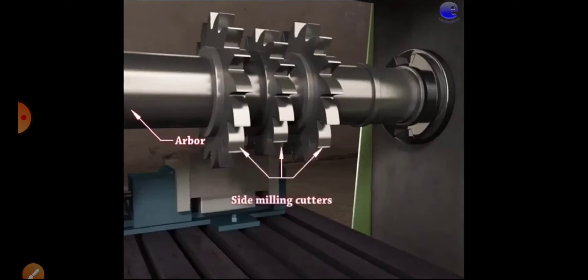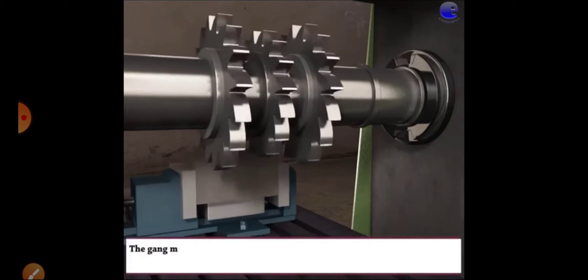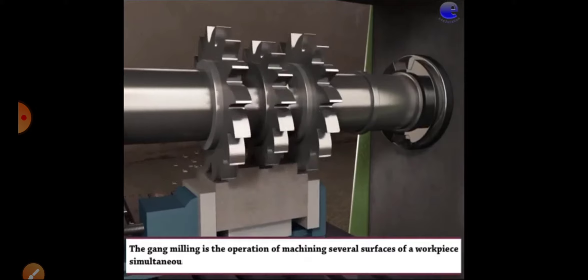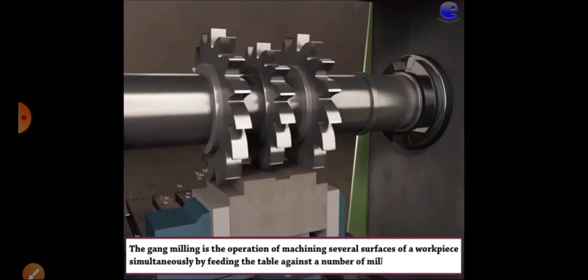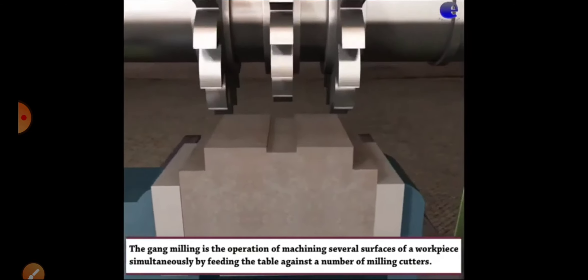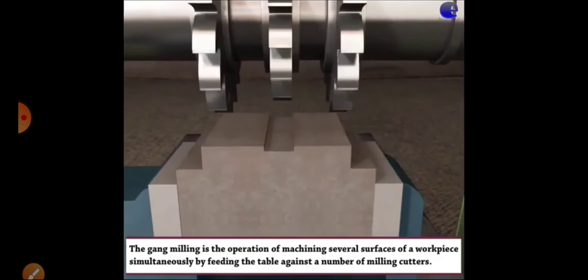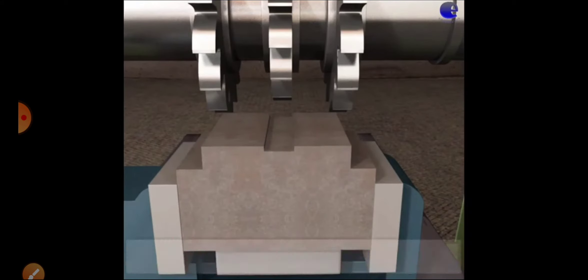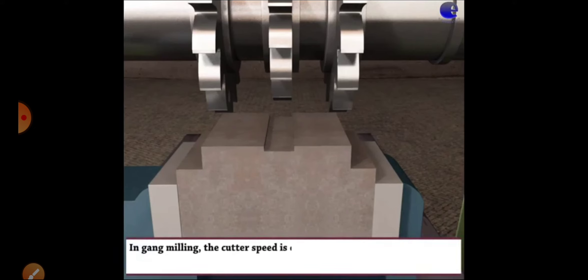Next is gang milling. Here more than two cutters, ten side milling cutters, are mounted. Ten slots will be cut at one time. This is gang milling where two or more cutters are used to save time. Instead of using one cutter multiple times, three slots can be cut with three cutters mounted at one time for machining.